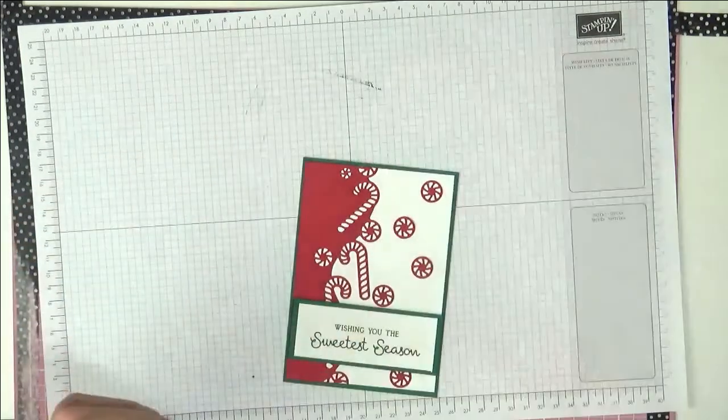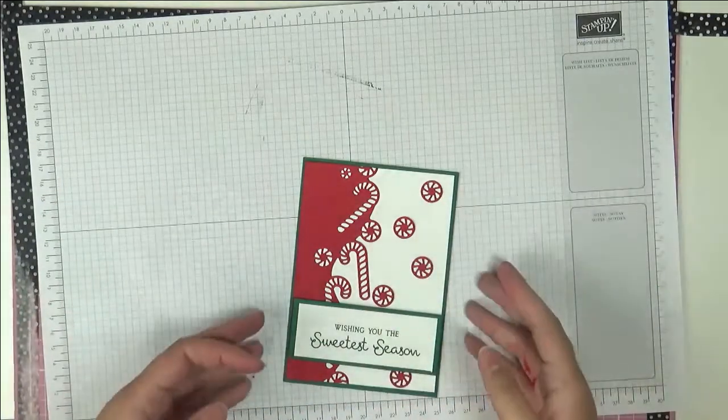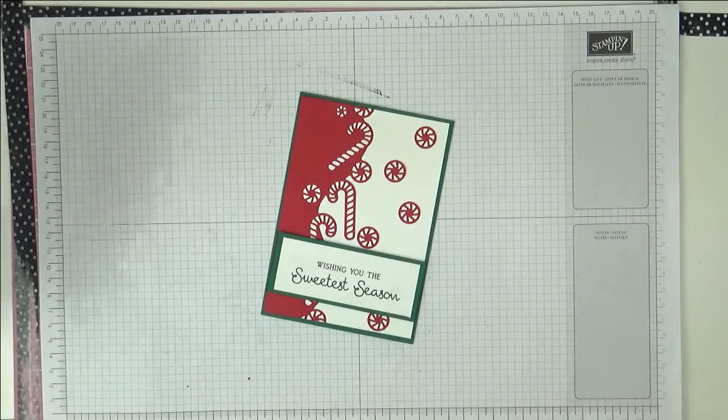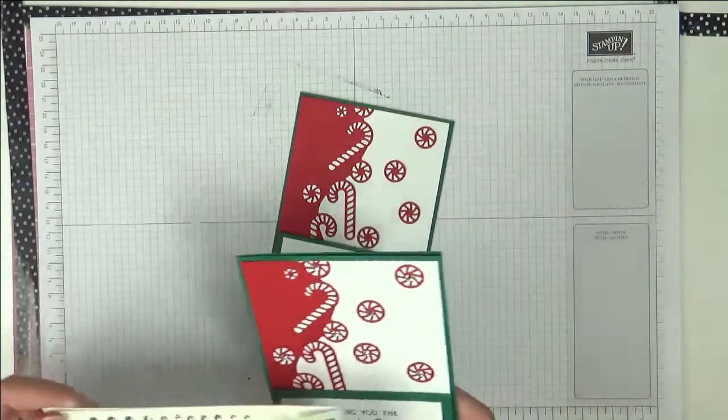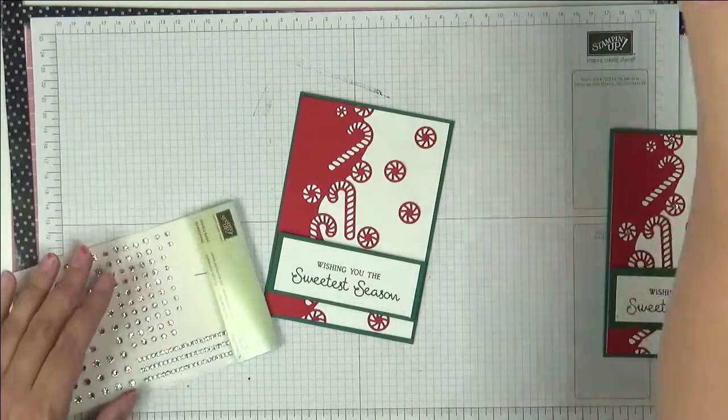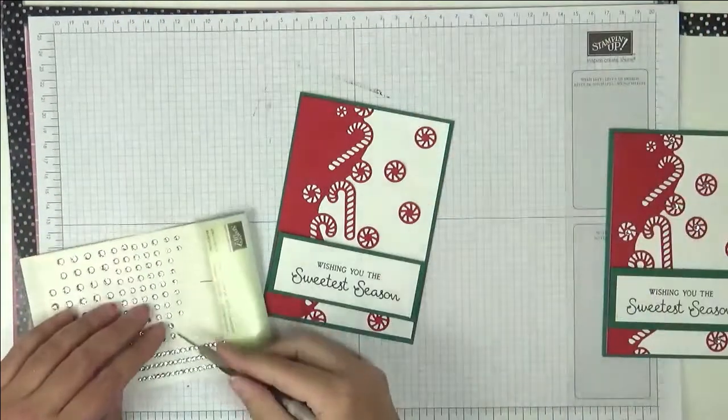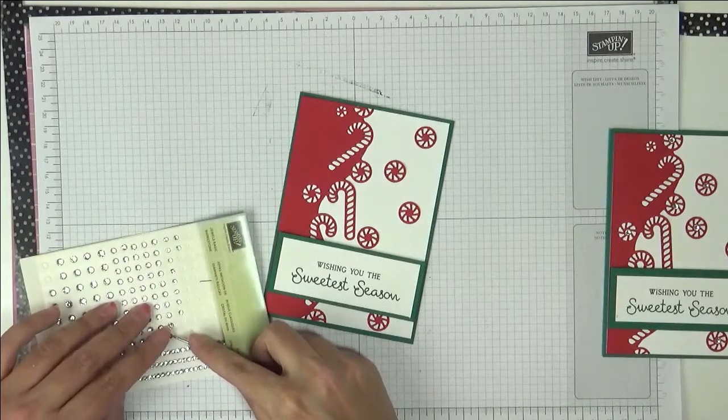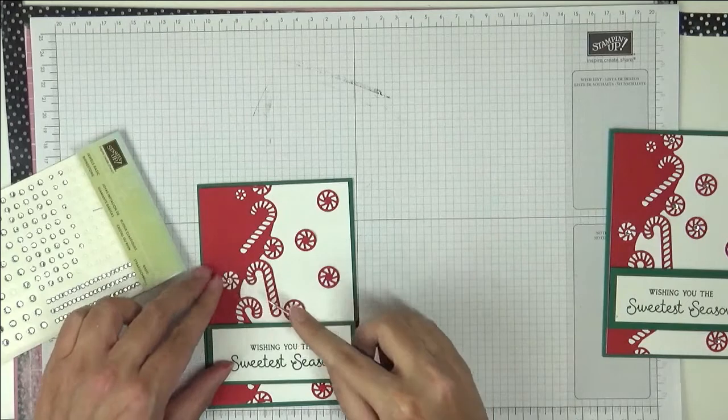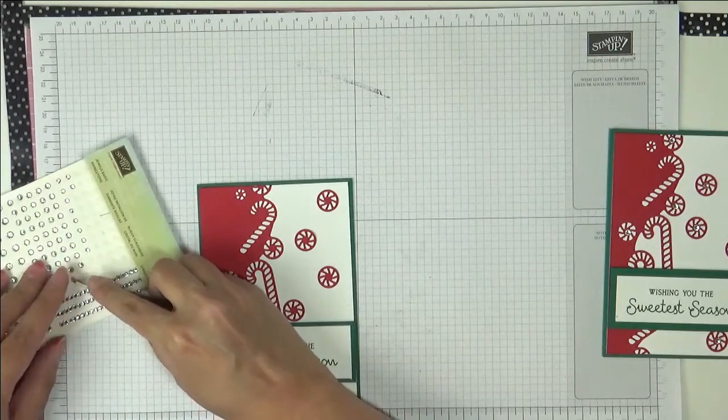One last one I'm going to tuck here as if it's coming out. Put that away. Then finishing touches, we're going to use some rhinestones. Let me see what size I used before. I used the medium size. I just put one in every center of these swirly things.